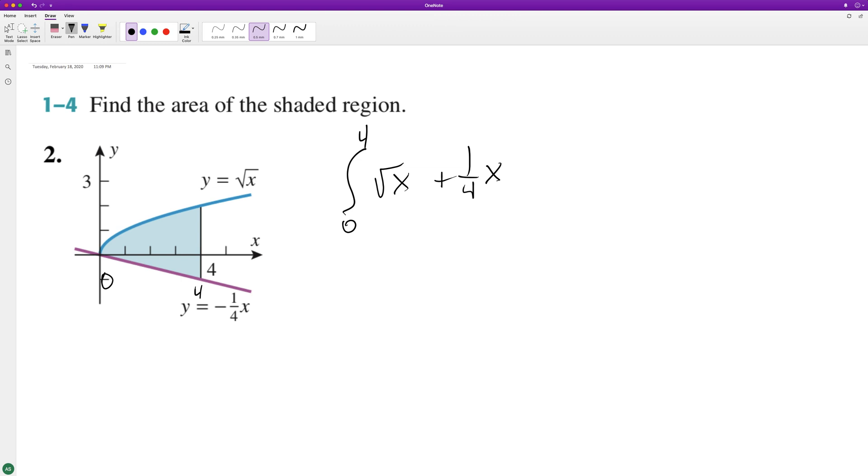Right here, this is the same thing as x raised to the one-half. So x raised to the one-half, plus one is three halves, divide by three halves, so it becomes two-thirds, plus x squared over eight. And with that, we're going from zero to four.